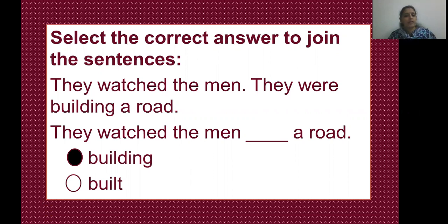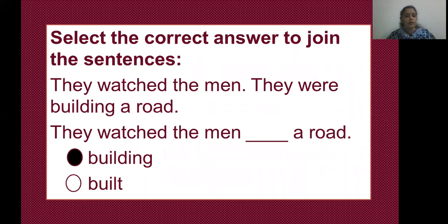The first sentence is taken as it is: 'They watch the men.' What were the men doing? They were building a road. So I have not taken 'they were' — I will just take the verb 'building a road.' They watch the men building a road. Clear? Let's move to the next one.